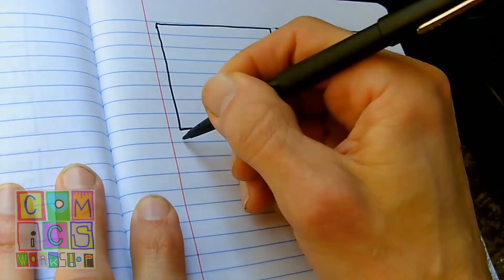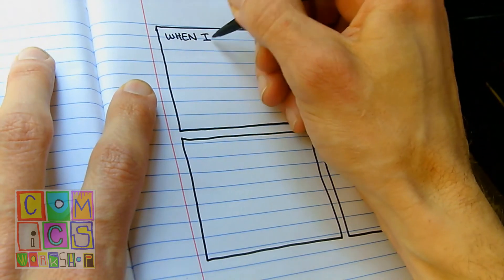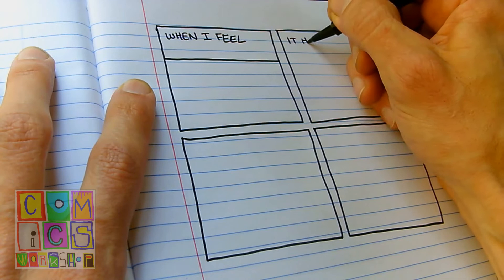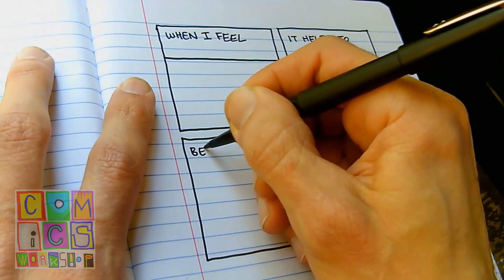So here's my basic format here that I'm using. I gave myself four panels and the first panel I say, when I feel, and fill in the blank. It helps to, and I think of an activity that I do at that time.